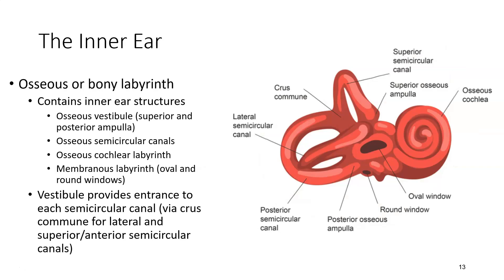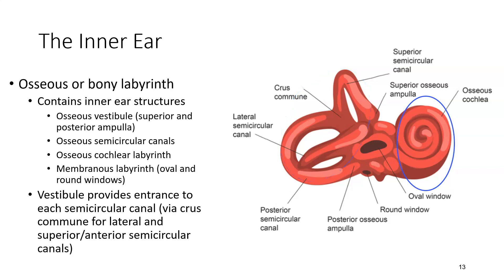The inner ear is surrounded by the osseous or bony labyrinth that holds all of the inner ear structures. It's fairly complicated, as you can see from this image. It consists of a combination of the osseous vestibule, which holds both the superior and posterior ampulla, the osseous semicircular canals, where the semicircular canals are located, the osseous cochlear labyrinth, where the cochlea is located, and it also has two holes that are part of the membranous labyrinth, which contain the oval window and the round window.